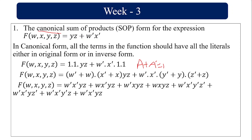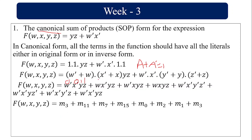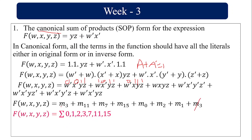Converting to minterms: a barred variable has value 0 and an unbarred variable has value 1. So w̄x̄yz = 0011 = 3, wx̄yz = 1011 = 11, wxyz = 1111 = 15, w̄x̄ȳz̄ = 0000 = 0, w̄x̄ȳz = 0001 = 1, w̄x̄yz̄ = 0010 = 2, w̄x̄yz = 0011 = 3. Since m3 appears twice, it counts once.